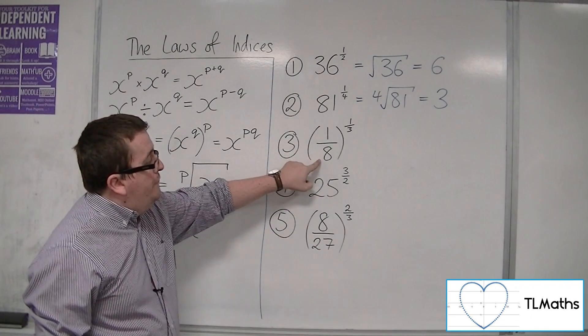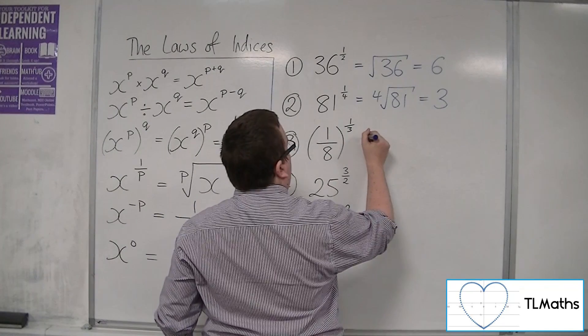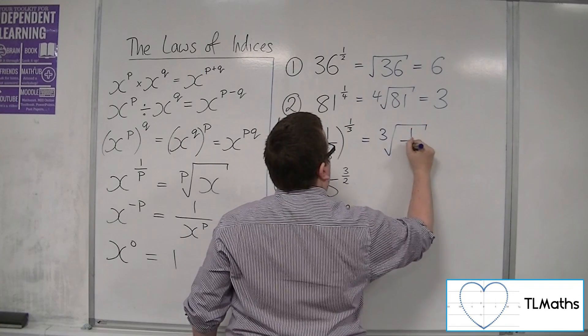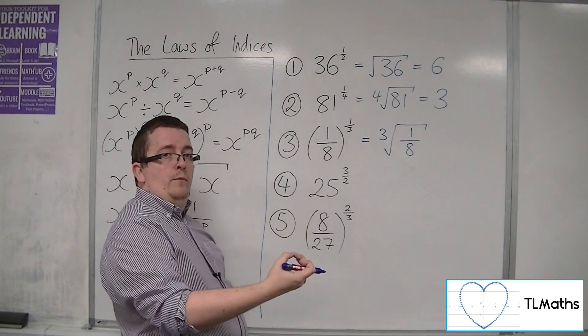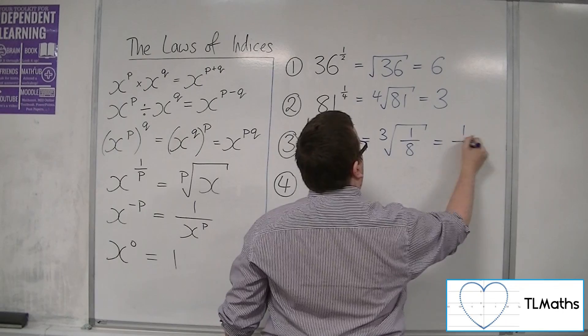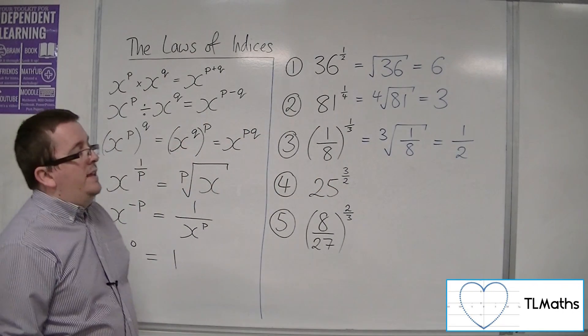Now, if I've got a fraction to the power of a fraction like this, 1 eighth to the 1 third, that is the cube root of 1 over 8. So cube root the numerator, the cube root of 1 is 1, and the cube root of 8 is 2. So the cube root of 1 eighth is 1 half.